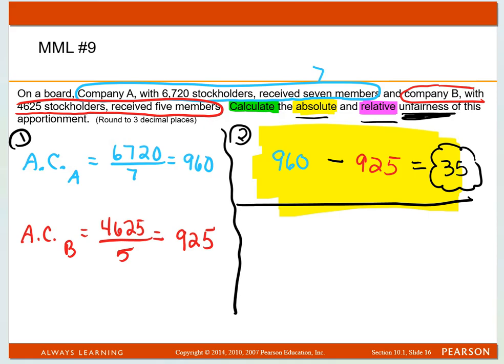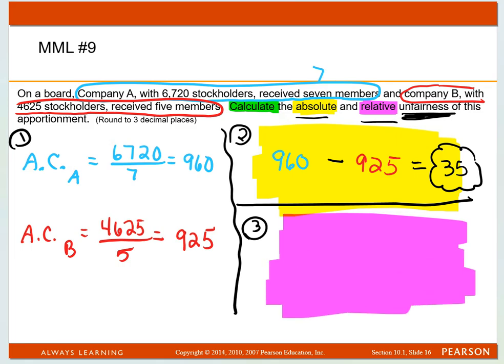And then the next part pops up, which will be step three, and that is finding the relative unfairness. The relative unfairness is taking the absolute unfairness,